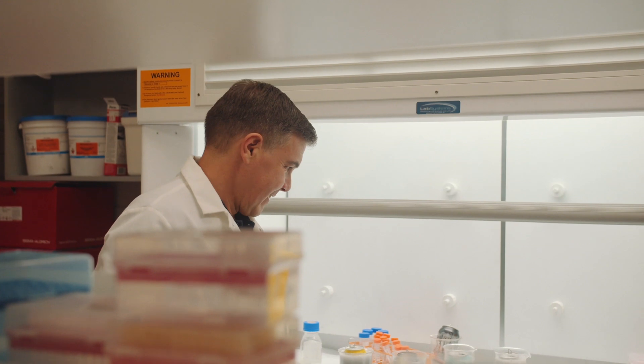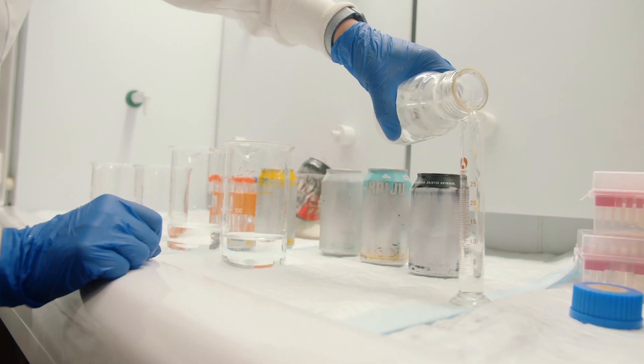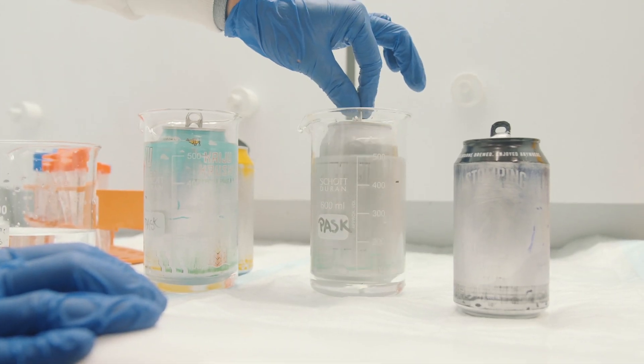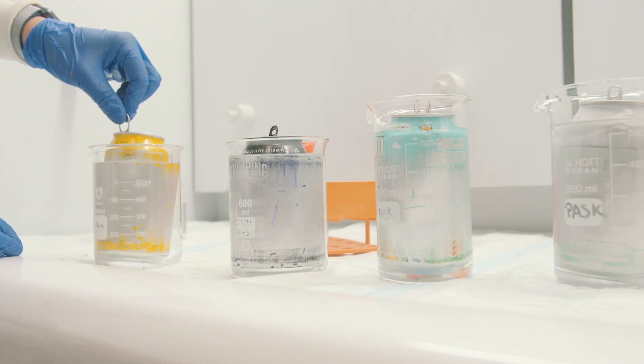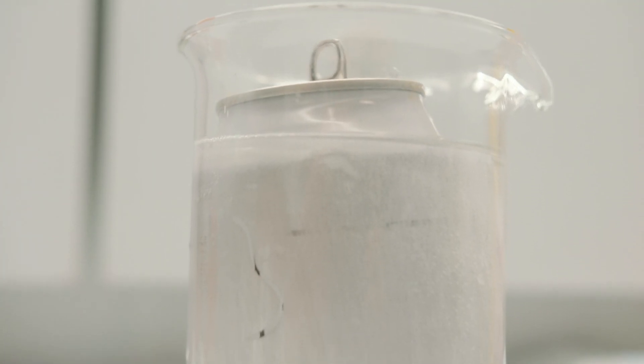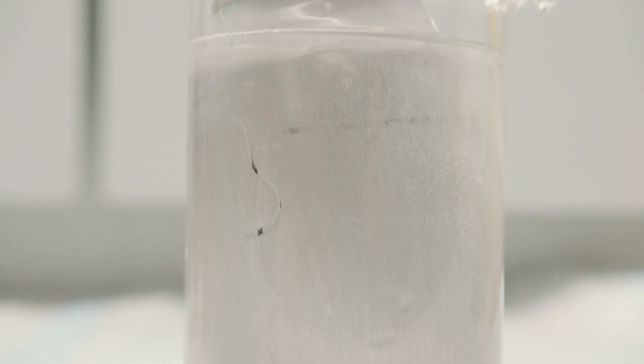What we're doing is an experiment where we use hydrochloric acid to actually dissolve the aluminium and then we can see that all the cans, and this is true of every single can that we drink beverages out of, has a plastic liner on the inside.